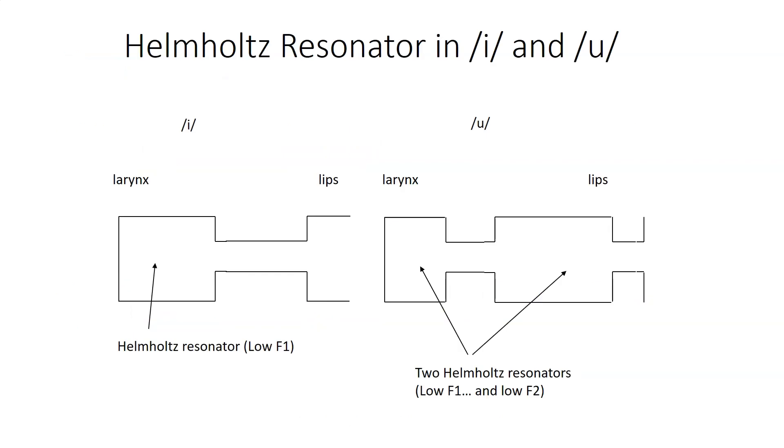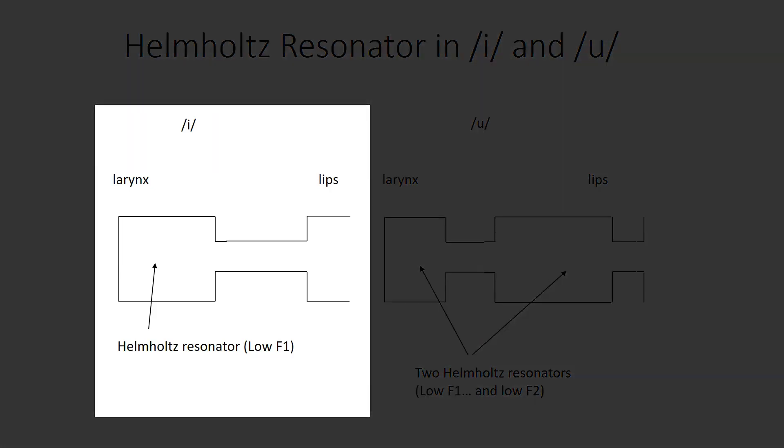In the case of the high front vowel /i/, we get a tube model like the one on the left. Again, we treat it as closed off at the larynx, open at the lips with a significant constriction in the front part of the vocal tract, behind the alveolar ridge in the sort of palatal region. This creates a bottle shape out of the pharynx, which gives us a Helmholtz resonator and a low first formant.